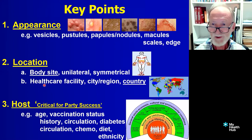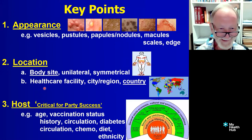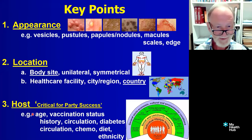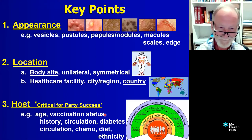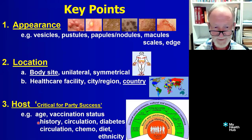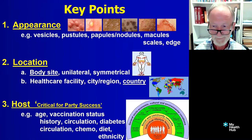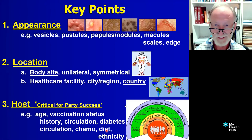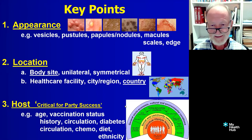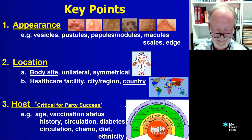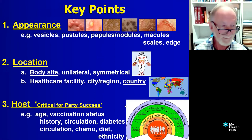Then there's the host — the host is critical for the success of the party. The party success, of course, is the microbes when they sing and dance because they've managed to break through our defenses. That can depend on age — a child is going to have a different reason for a rash than an adult, generally. Vaccination status: if they haven't been vaccinated for measles, then they're more likely to have it. Similarly, history — is it something that keeps recurring with Staphylococcus aureus boils? What's their circulation like, diabetes, etc.? Are they on chemotherapy? Have they got an immune system deficiency? Diet and ethnicity — ethnicity can tie in, but seldom is your genetics responsible; it's normally to do with socioeconomic issues.